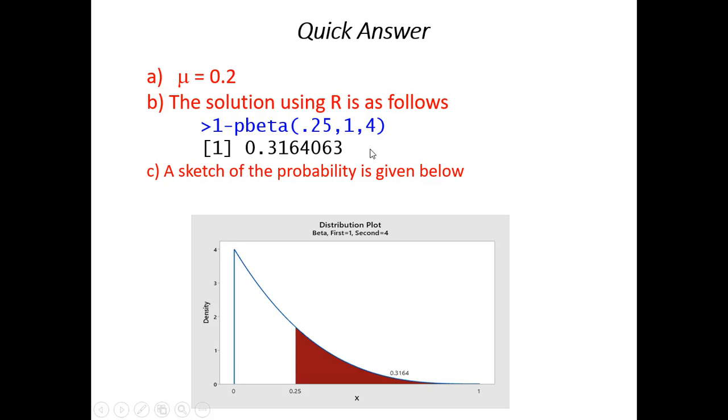And we could confirm that also using Minitab, something called a distribution plot. So, here's what we're looking at, this distribution plot. Again, you can see this almost reduces down to an exponential. We want the probability X is greater than 0.25, so this becomes a right tail, and the probability works out to 0.3164.